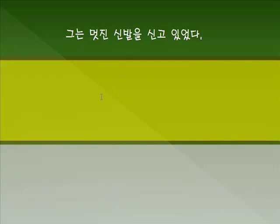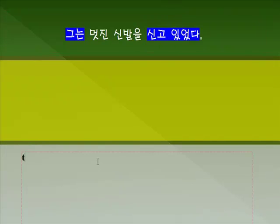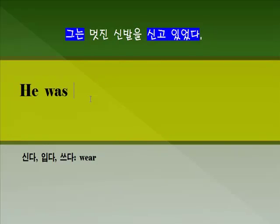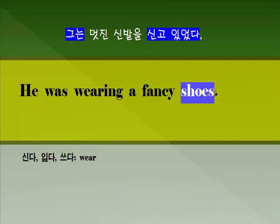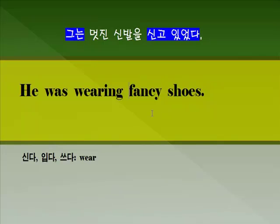두 번째 문장입니다. 그는 멋진 신발을 신고 있었다. 신다, 입다, 모자를 쓰다 — 이런 경우에 'wear'라는 단어를 씁니다. 그는 신고 있었다는 'He was wearing'입니다. 멋진은 'fancy'라는 단어를 쓰면 됩니다. 'fancy shoes' — 문장을 보세요. 뭐가 잘못됐습니까? 복수형으로 되어 있는데 앞에 단수 부정관사 'a'를 썼습니다. 삭제해줘야 올바른 표현이 됩니다. 완성: 'He was wearing fancy shoes.' 신다, 입다, 쓰다에 'wear'를 쓴다는 것 참고하시기 바랍니다.